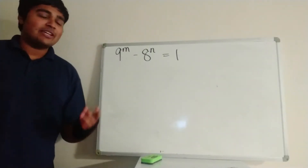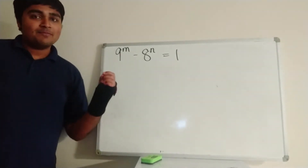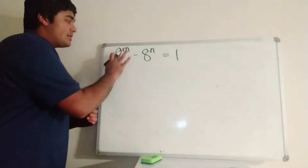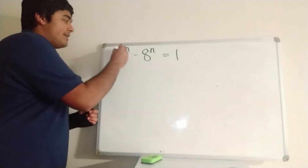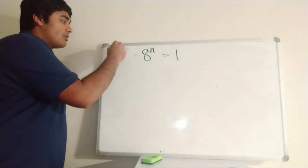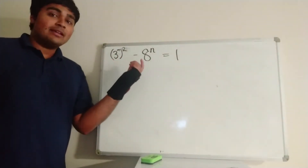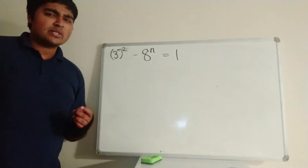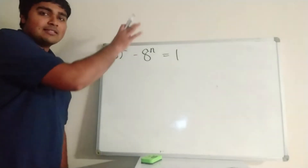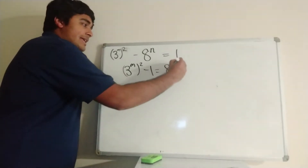There is a little bit of a strategy we can use: notice that 9 is a square number, so 9 to the power of m will always be a square number as well. We know 9 is just 3 squared, so we can write this as 3 squared raised to the m, which is the same as 3 to the m, squared. So we've got a square number minus something equals 1, and notice that 1 is also a square number. Rearranging, we can write this as a difference of two squares: 3 to the m squared minus 1 equals 8 to the n.